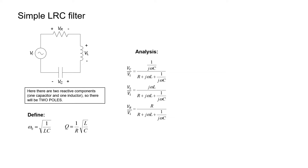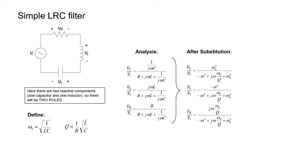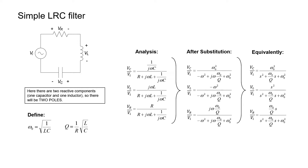In this LRC circuit we can measure the output in three different positions. We can measure the output across the capacitor, the inductor, or the resistor, and depending upon where we measure that output we would get three different transfer functions. Notice that in all of these transfer functions the denominator is the same. If we make the substitutions for omega-0 and Q that we just defined, then we can rewrite the transfer functions in terms of two constants, omega-0 and Q,